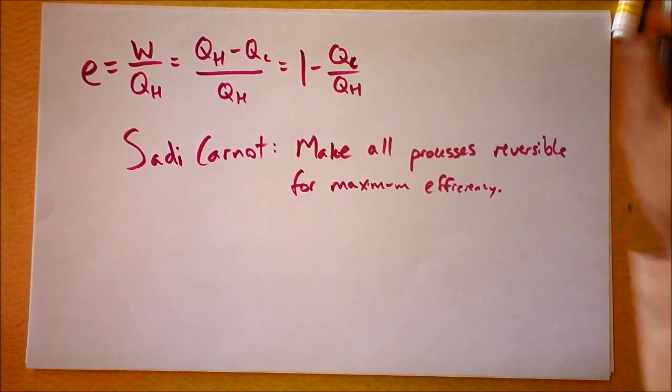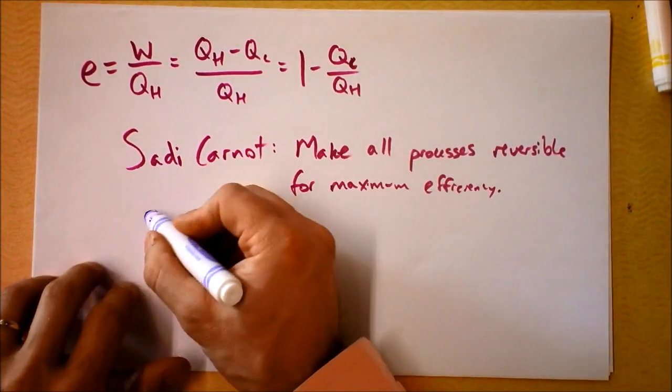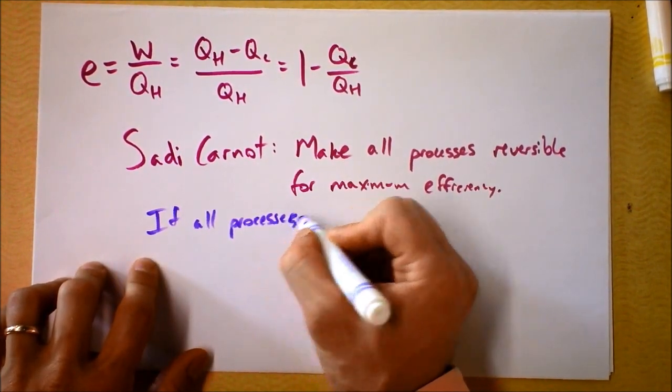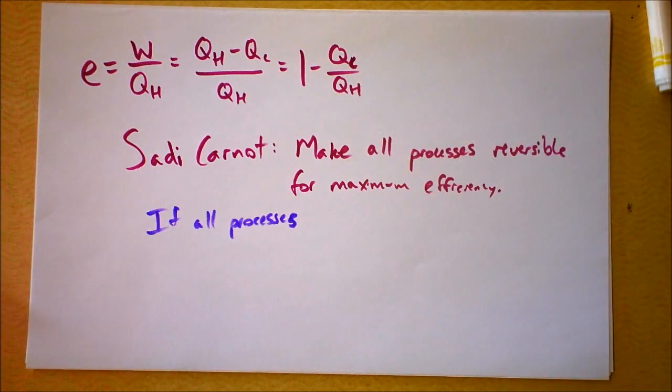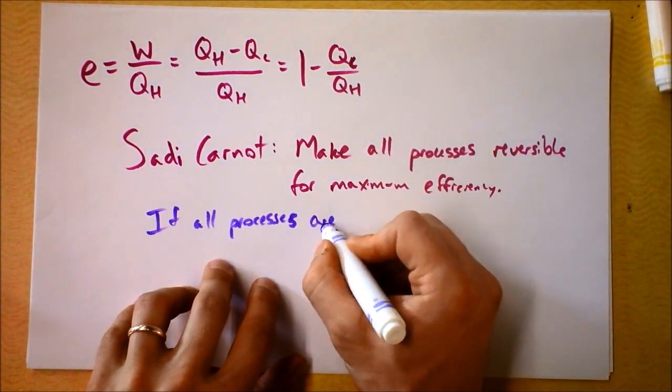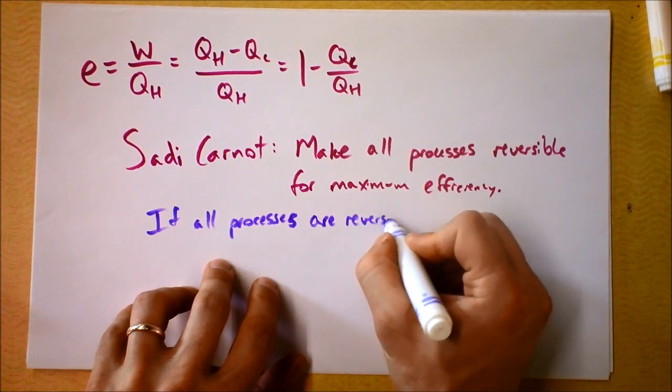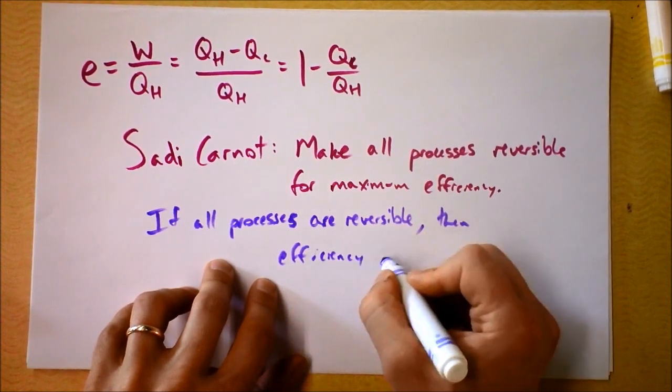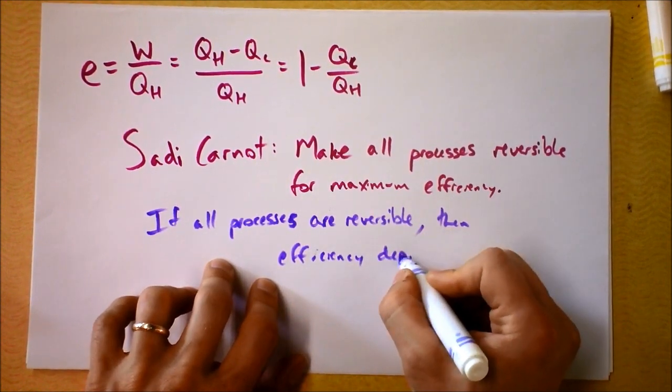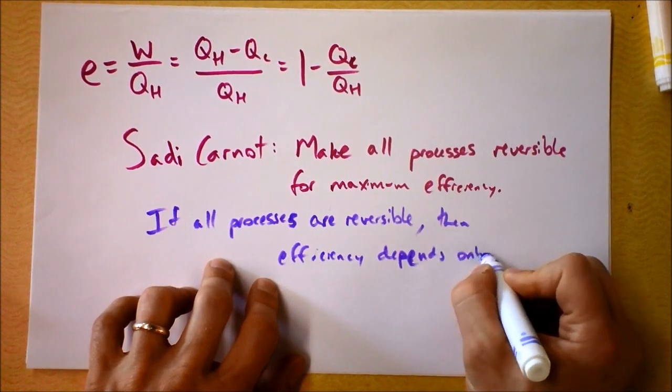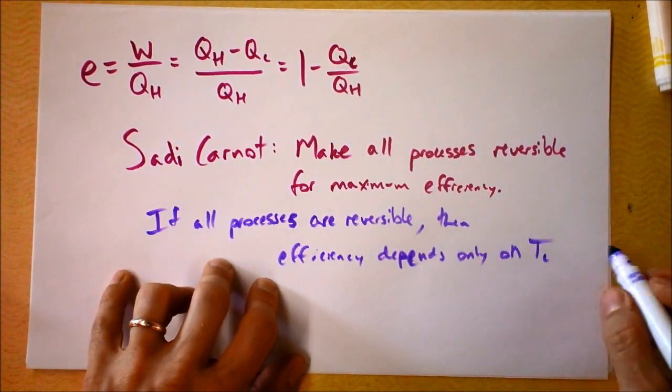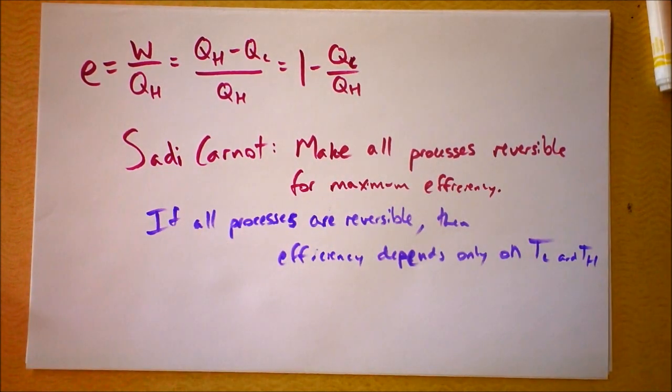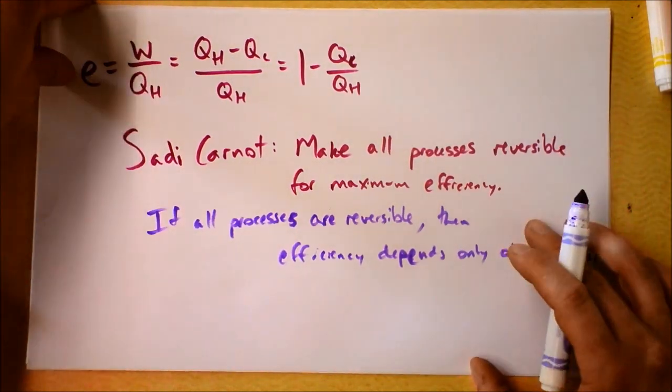There's more that Carnot said. Carnot also said, if all processes are reversible, then efficiency depends only on the temperature of the cold reservoir and the temperature of the hot reservoir. And that led Lord Kelvin.